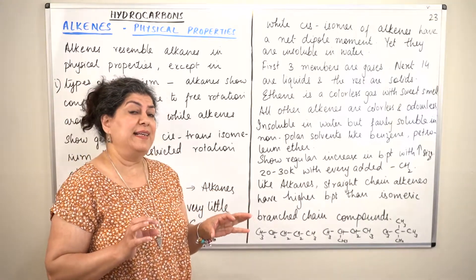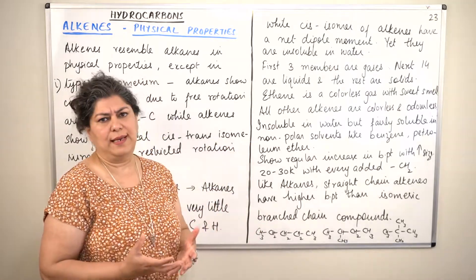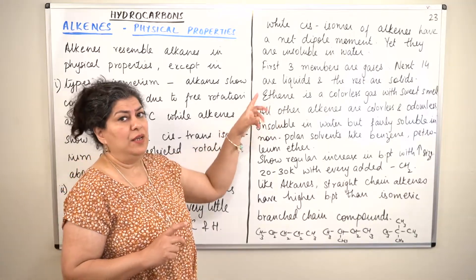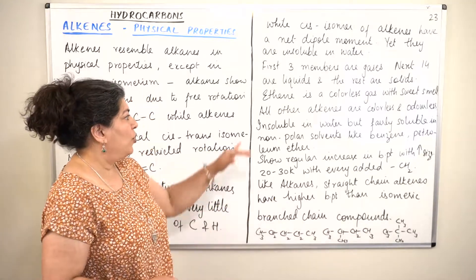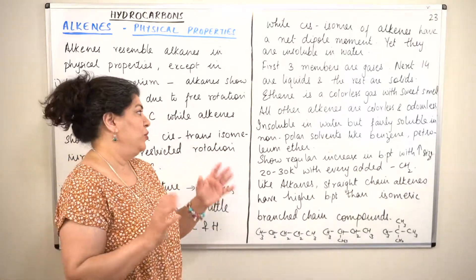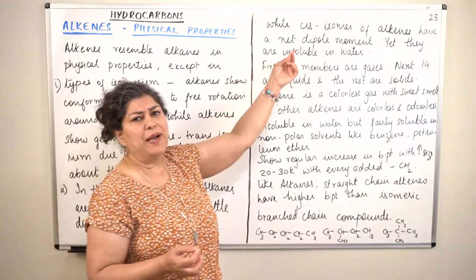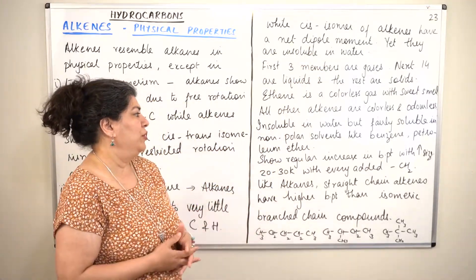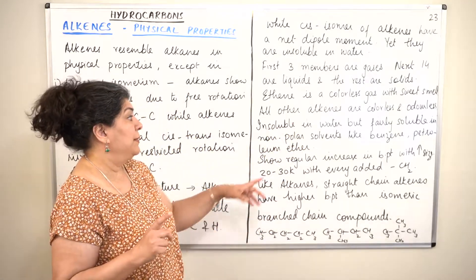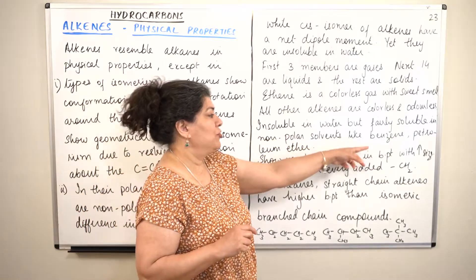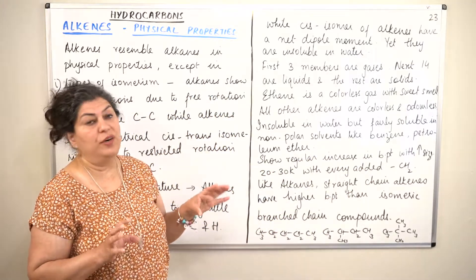Ethene is a colourless gas with a sweet smell. Alkanes are colourless and odourless. Alkenes are also colourless and odourless, except for ethene which is colourless but has a sweet smell — only ethene has a smell. They are insoluble in water because they are basically non-polar. Even if they have a very mild dipole moment in the case of cis-isomers, they are still non-polar in nature. They are soluble in non-polar solvents such as benzene and petroleum ether.